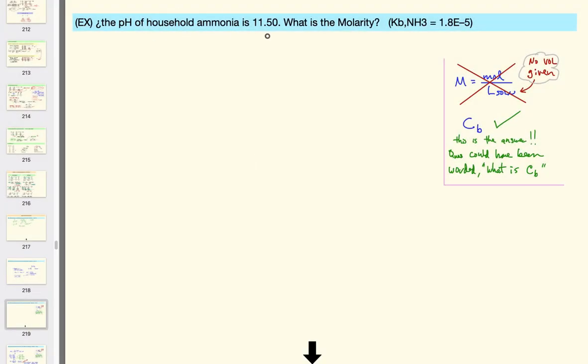The pH of household ammonia is 11.5. We see a couple of things. We have a weak base system, and we know the pH, which means if we need it, we know the pOH, and we got the hydroxide concentration, and we know the H-plus concentration if we need it. What is the molarity?